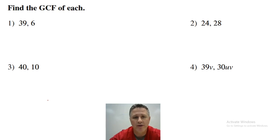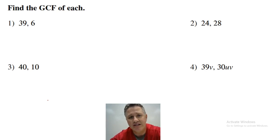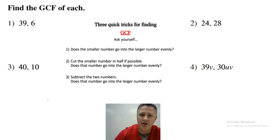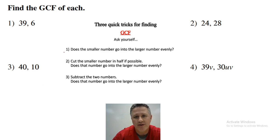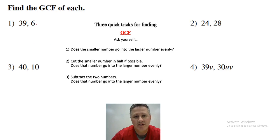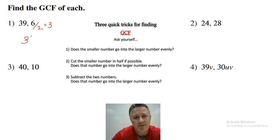Let's look at question number one. We're looking for the GCF of 39 and 6. Does the smaller number 6 go into 39? No. So I'm going to cut the smaller number in half, which is 3. Does 3 go into 39? Yes. So that means 3 is the GCF.